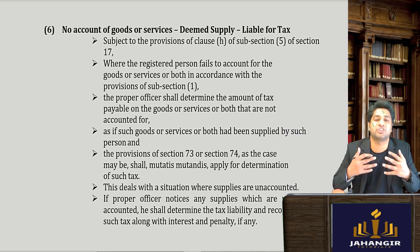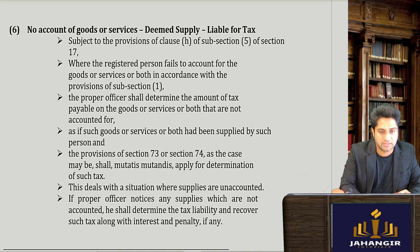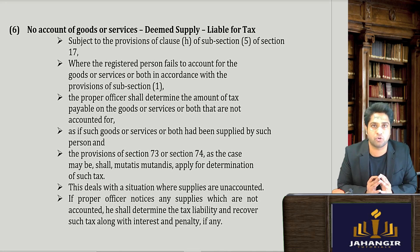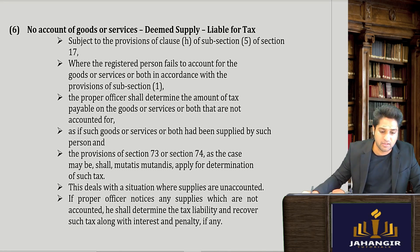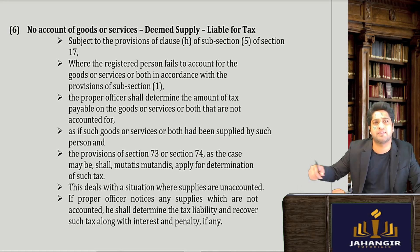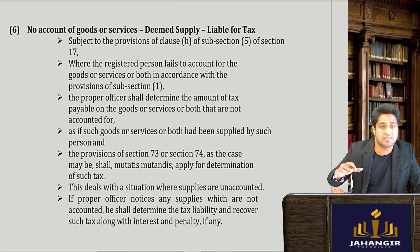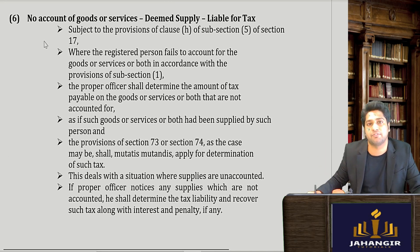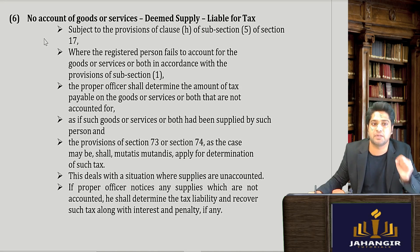The audit requirement was casting an additional burden and cost onto suppliers. Now, since everything is automated, separate auditing is not required. The government has provisions for general audit wherever they feel there has been suppression — they can conduct an audit. It is not mandatory for all, as Section 35 subsection 5 has been omitted.